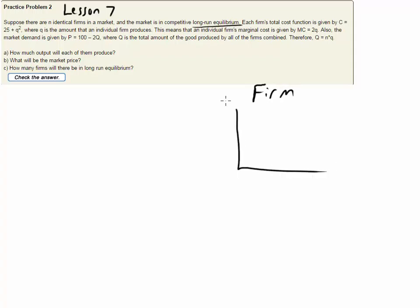So let's draw a graph of our firm. We have P and Q on our axes like normal. I know that in long run equilibrium I'll have some kind of marginal cost curve.